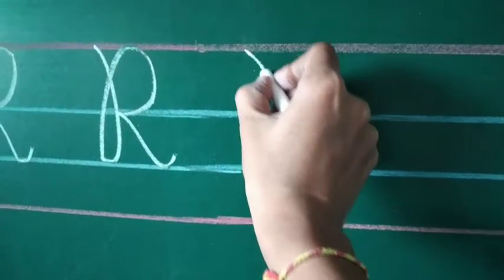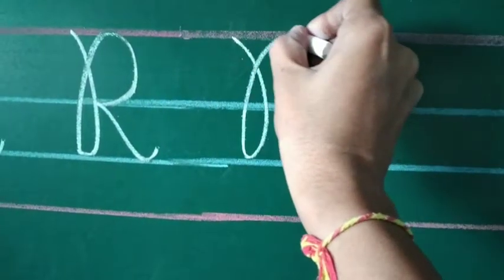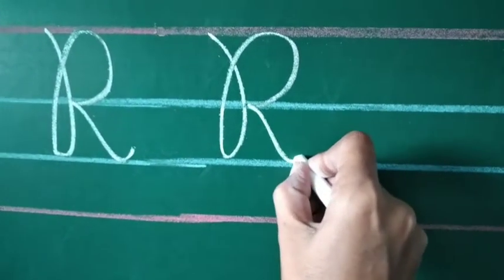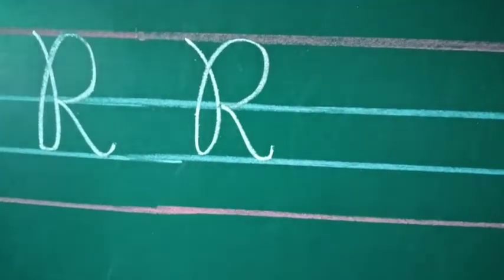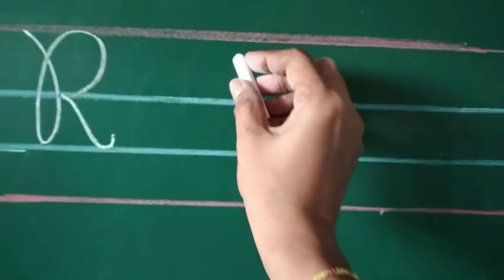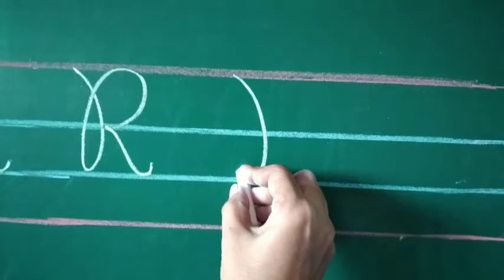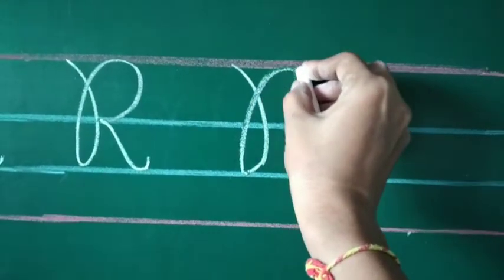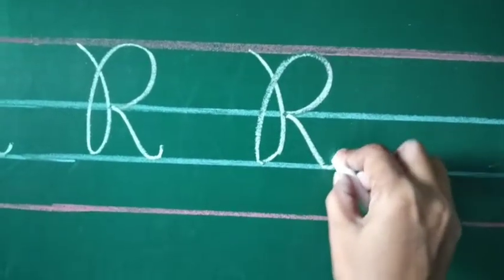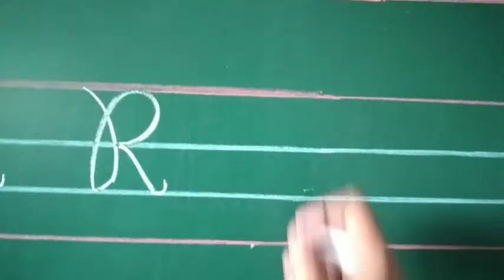Start from the red line, take a little turn, go up to touch the red line, make a half circle, join, make a slant line and take a little turn. This is letter R. Start from the red line, take a little turn, go up to touch the red line, make a half circle, join, make a slant line and take a little turn. This is letter R.